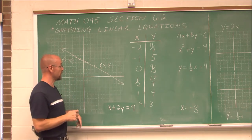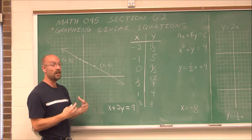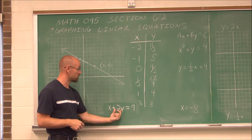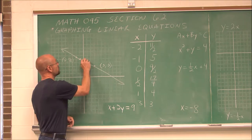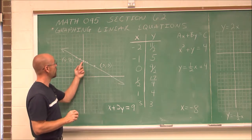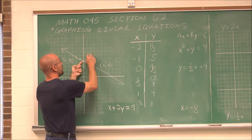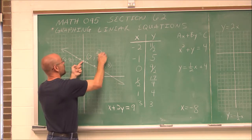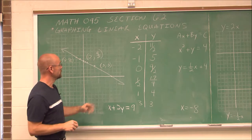Hopefully you understand the concept. What we have here is a representation of the infinite solutions that represent this equation, x plus 2y equals 9. We're going to define some of these special values shortly — where they actually intersect the axes. We already know this one because we graphed it: when x was 0, we were on the y-axis and got 9 halves. We'll talk about that point later.